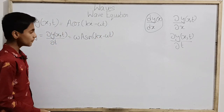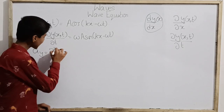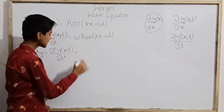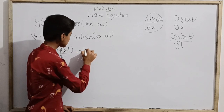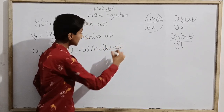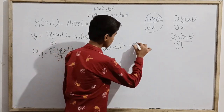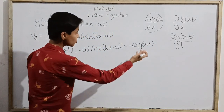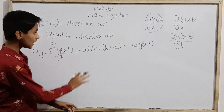I am interested in the acceleration along y, which is the second-order partial derivative of the wave function with respect to time — not just a double derivative but a double partial derivative. Differentiating again gives us: ∂²y/∂t² = −ω²a cos(kx − ωt). Now, a cos(kx − ωt) is just the wave function y itself, so the acceleration equals −ω² times the wave function. That is, the acceleration is minus the angular frequency squared times the wave function.